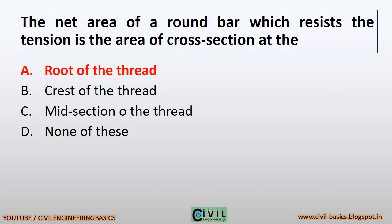The net area of a round bar which resists the tension is the area of cross section at the root of the thread.